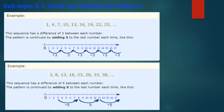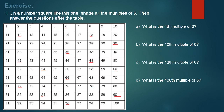Now for the exercise. Question number one: a number square is shown — shade all the multiples of six, then answer the questions on the right side. The multiples of six are: 6, 12, 18, 24, 30, 36, 42, 48, 54, 60, 66, 72, 78, 84 — and so on. I have shaded all the multiples of six in the square.